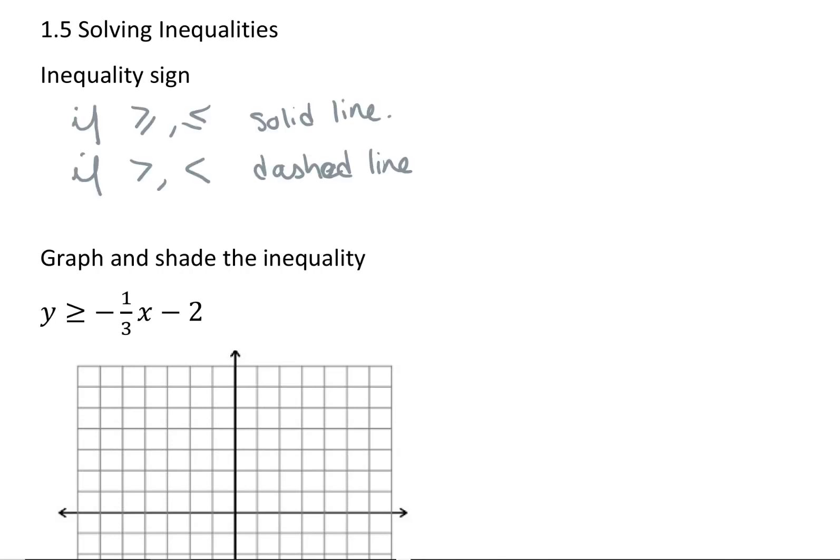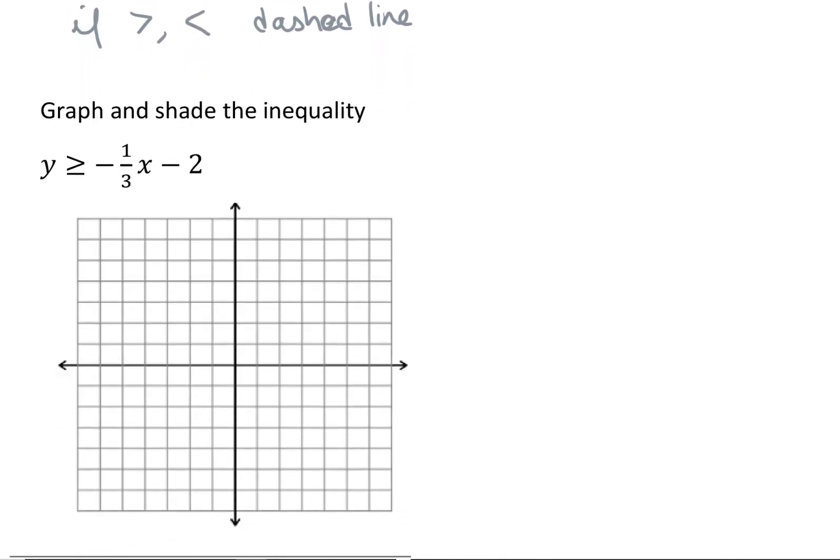If we're given the inequality where it has an equal sign as well as the inequality, we're going to graph a solid line. If we just have a greater than or less than sign, it's going to be a dashed line. So we're going to go down and start our first example.